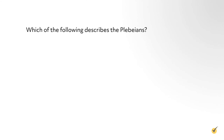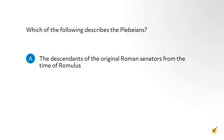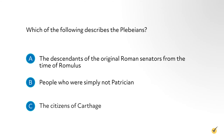Before we finish up this first part of our overview, let's look at a couple of quick review questions to test your memory. Which of the following describes the Plebeians? A: The descendants of the original Roman senators from the time of Romulus. B: People who were simply not patrician. Or C: The citizens of Carthage? The correct answer is B. The only real difference between Plebeians and patricians is based purely on birth.